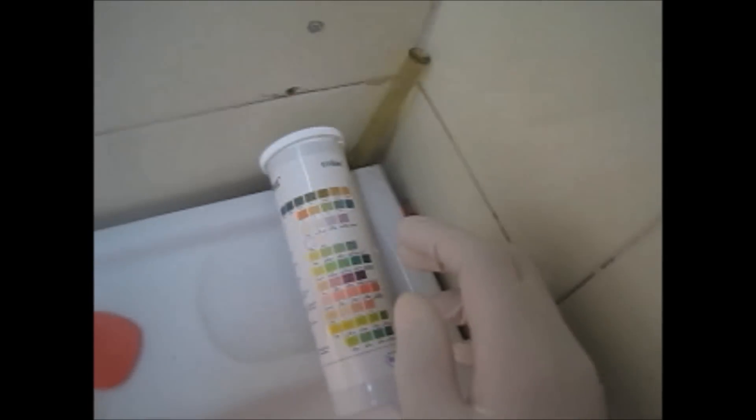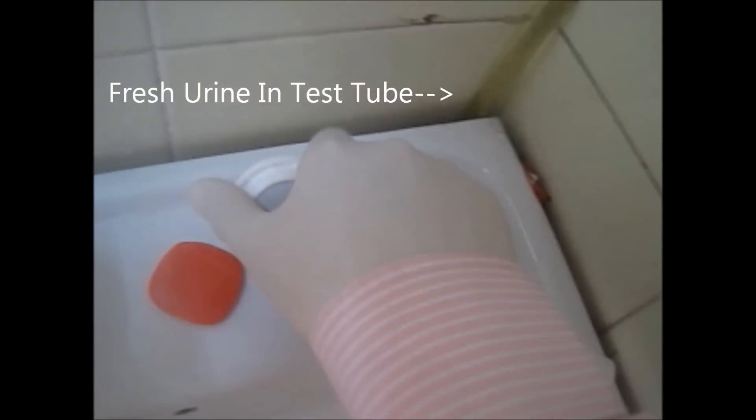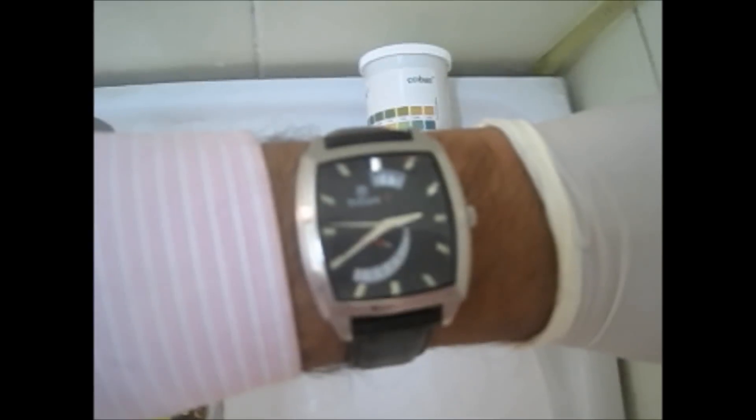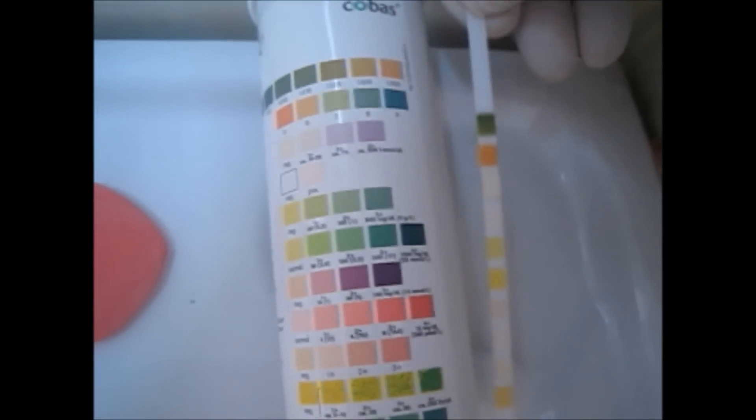This is a rapid test to perform the routine and microscopic examination of urine. You need to take the urine in a test tube, take the strip from the vial, and just after one to two seconds you have to see it and read the strip within two minutes, otherwise it will not be reliable.